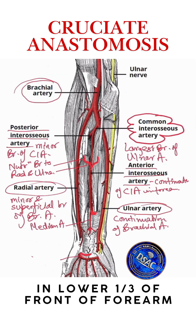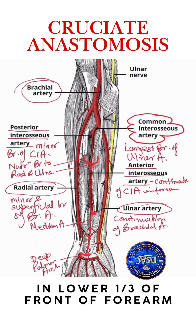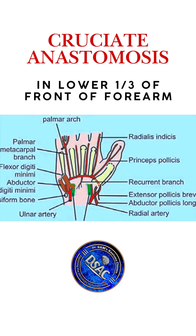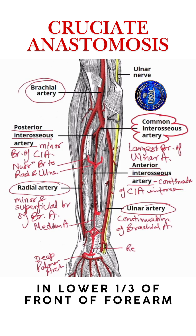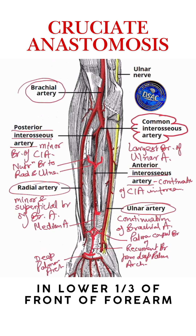This is considered to be a deep palmar arch. And this deep palmar arch gives a recurrent branch which passes below the flexor retinaculum to reach into the forearm space of Parona. From the two sides also — from the radial artery, a transverse branch, and from the ulnar artery also, a transverse branch — these reach here to pass straight in this anastomosis. And these are called the palmar carpal branches from the radial and ulnar artery. This one is the recurrent branch from the deep palmar arch. And this is the palmar carpal branch of the ulnar artery. And this is the palmar carpal branch of the radial artery.